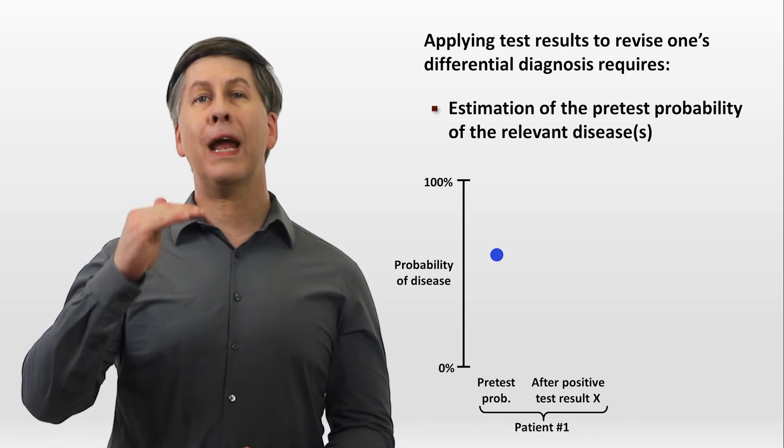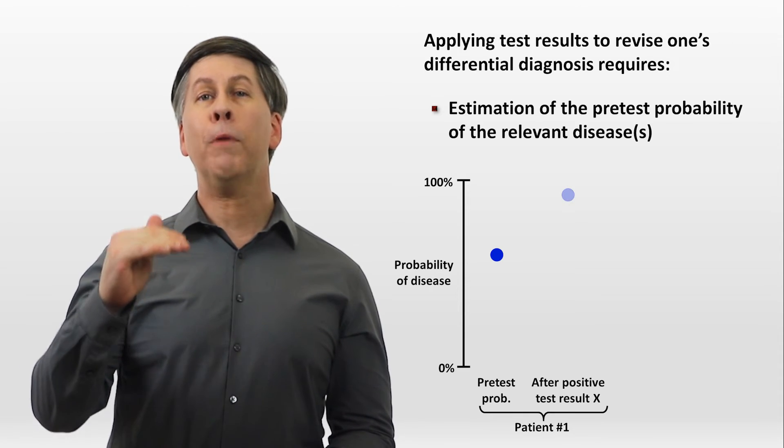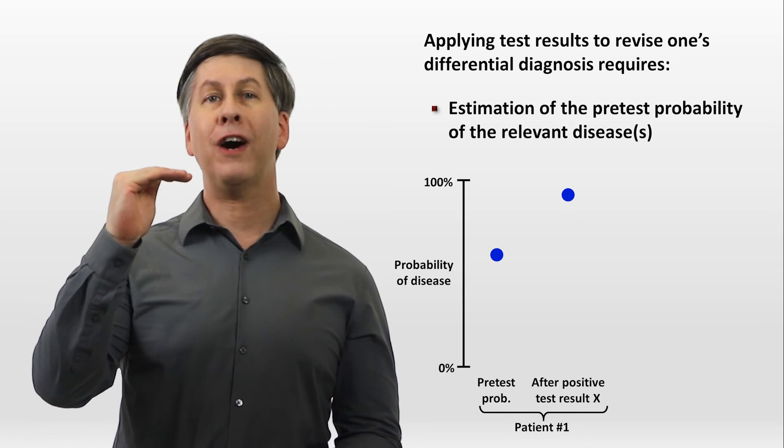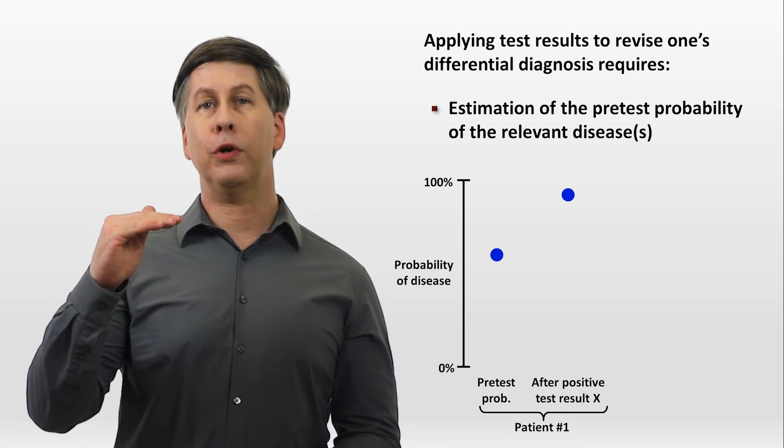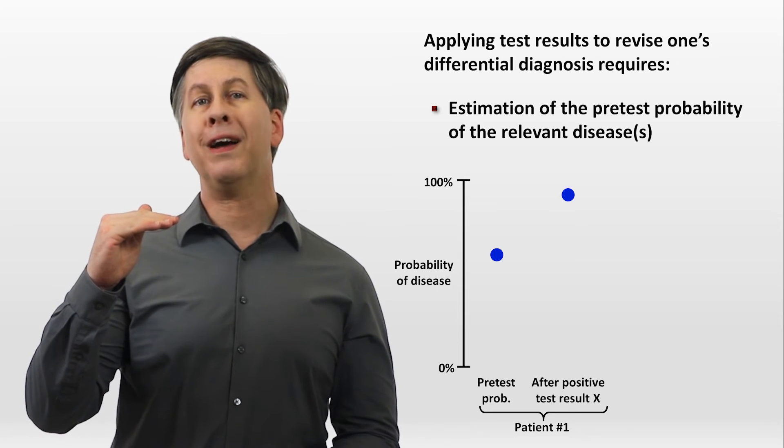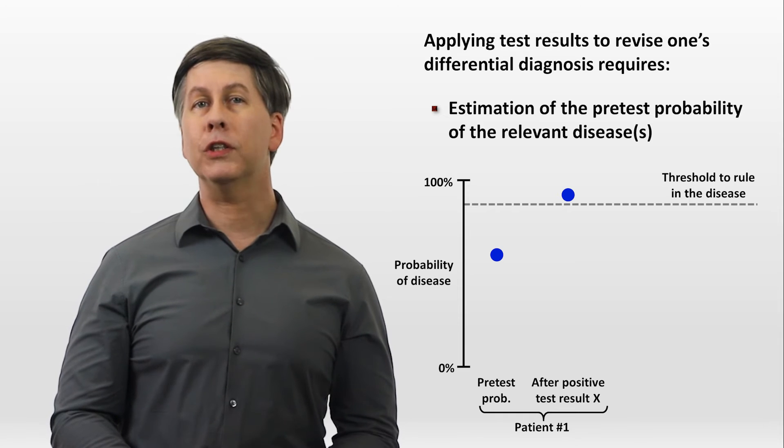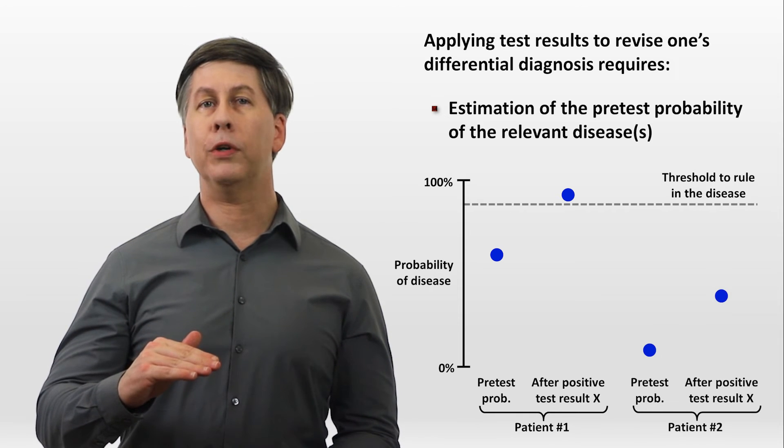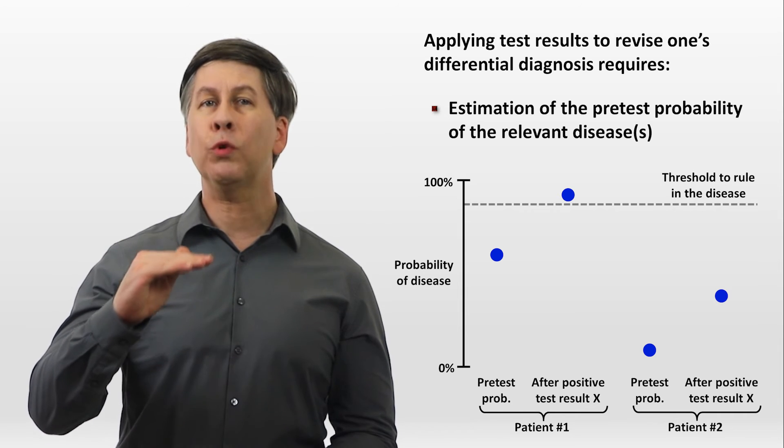Qualitatively, the higher a patient's pretest probability was for having a disease, the higher their post-test probability will be following a positive test result. So for one patient with a relatively high pretest probability, that post-test probability will be high enough to rule in the diagnosis, while for a different patient with a lower pretest probability, the same exact positive test result will not rule in the diagnosis.